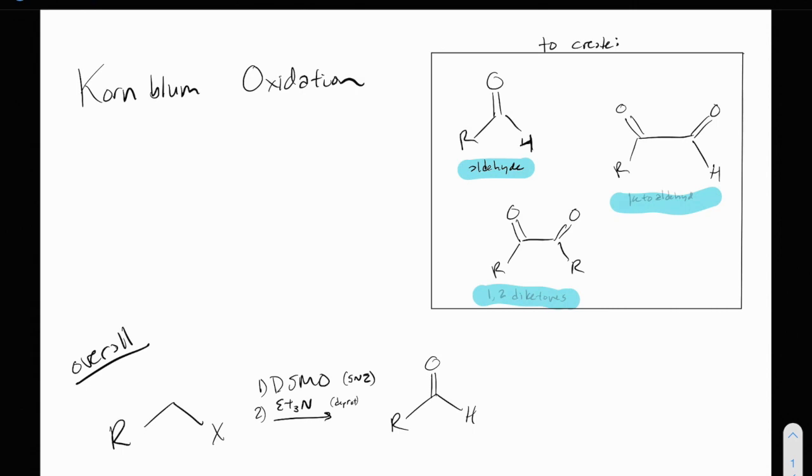So anyway, the overall reaction mechanism is you've got your primary alkyl halide and then you have an SN2 reaction with DMSO followed by a deprotonation and then this really fun intramolecular cyclic situation that happens to produce the aldehyde. So let's go over the mechanism.